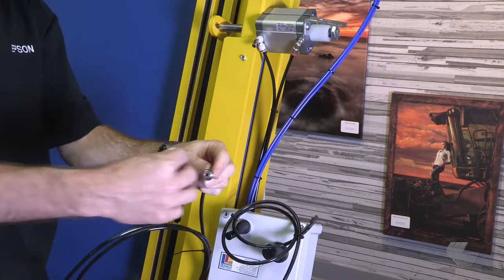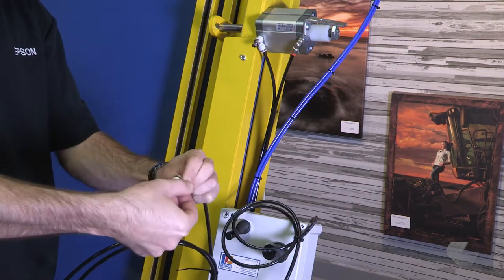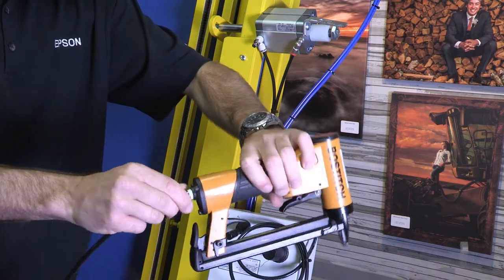Next, take the air line for the staple gun and apply Teflon tape. Attach the staple gun to the line.